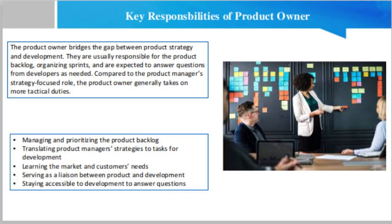The fifth responsibility is staying accessible to development to answer questions. During a sprint, the development team might be unclear about a particular task assigned to them — for example, why a user story calls for designing product functionality in a particular way, or whether a faster approach might undermine product management's strategic goals. In these instances, the development team should ask the product owner for answers and guidance. Because company development sprints are time-boxed — usually two weeks or a month at the longest — the product owner should be accessible and prepared to respond to questions immediately.